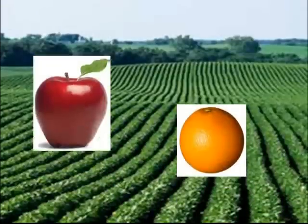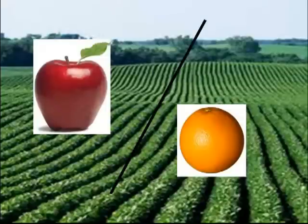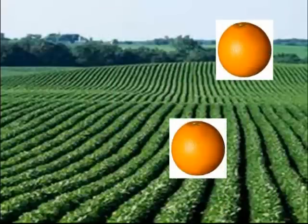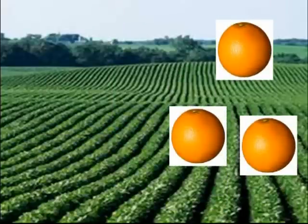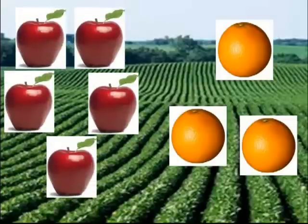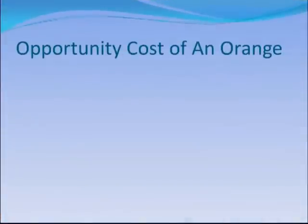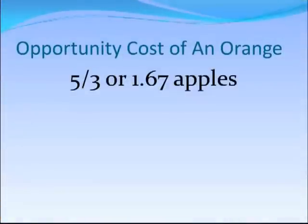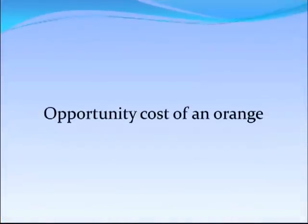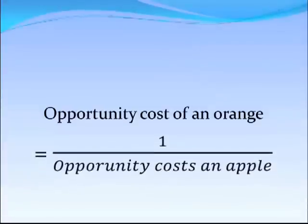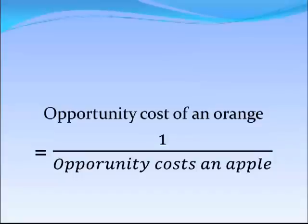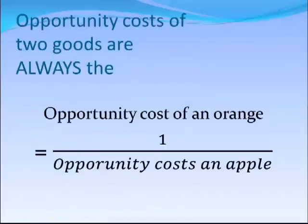Now if we go the other way and want to increase oranges, we have to give up apples — so it's apples divided by oranges. We would get three more oranges but give up five apples, so the opportunity cost of an orange is five over three, or 1.67 apples. Notice that the opportunity cost of an orange is exactly equal to one over the opportunity cost of an apple — this always holds true in comparative advantage problems. The opportunity cost of the two goods are always the inverse of one another.